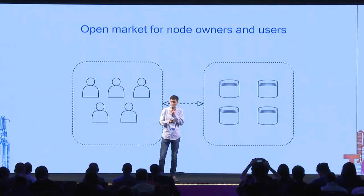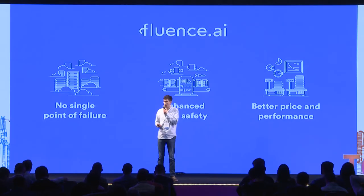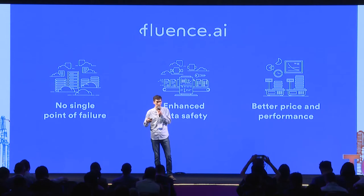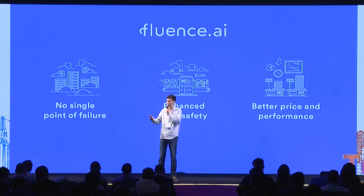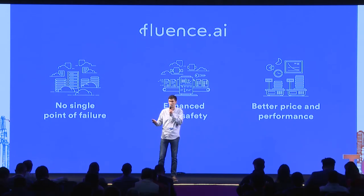The final challenge is having an open market of hardware. Different clients can have different workloads, data types, and request types, and different nodes have different hardware. An open market simply allows clients to find the best hardware, and the best node owners to find ideal clients. What we end up with is a database network that distributes data across different locations and independent hardware owners, secures data with end-to-end encryption, and effectively reduces the price of storage by creating an open hardware market.